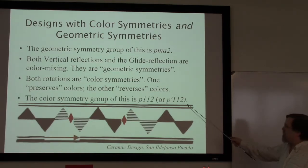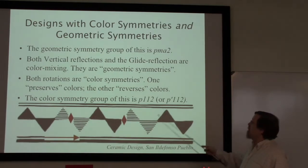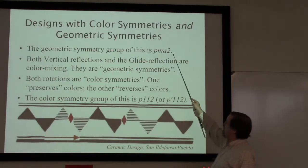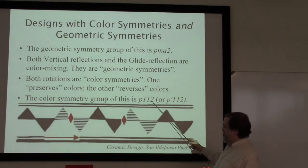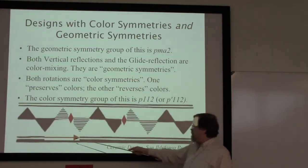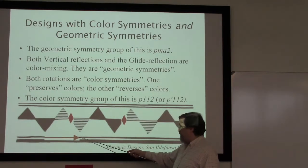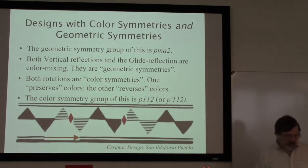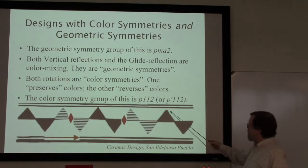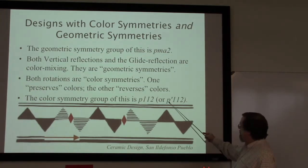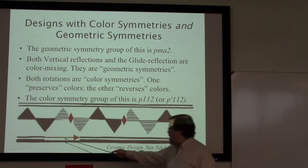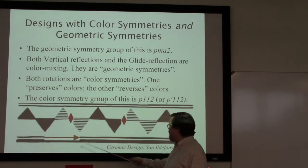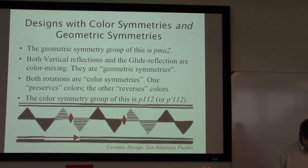The overall color symmetry group of this — not the geometric symmetry group, which is pma2 — but the color symmetry group is p112, where we put in the translation which is color reversing and the two rotations needed for p112. We'll put a prime on the p to indicate that the translation is reversing, but we won't put a prime on the two. We'll discuss that notation in more detail later.